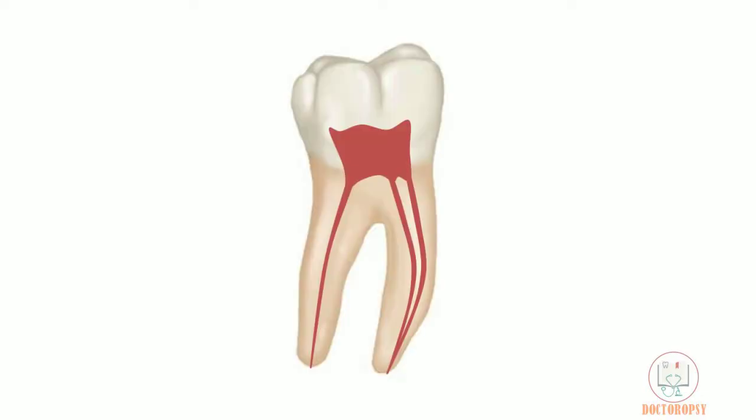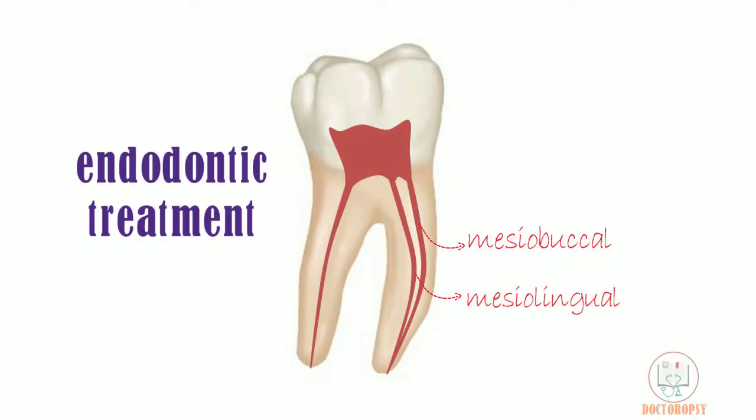The mesial root usually has two root canals — mesiobuccal and mesiolingual — which is important for endodontic procedures.